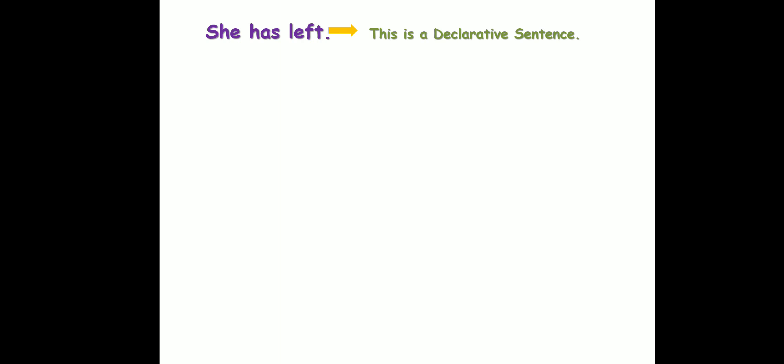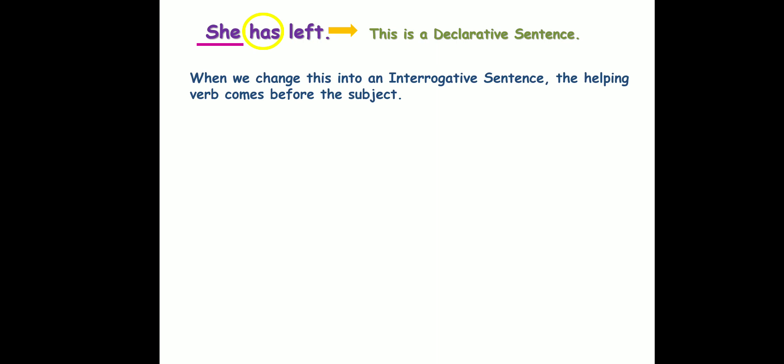Now, in a declarative sentence, 'she' is the subject, 'has' is the helping verb, and 'left' is the main verb. So subject comes first, then the helping verb, then the main verb. I've underlined the subject in pink and circled the helping verb in yellow to make it clear. When we change this into an interrogative sentence, the helping verb comes before the subject.